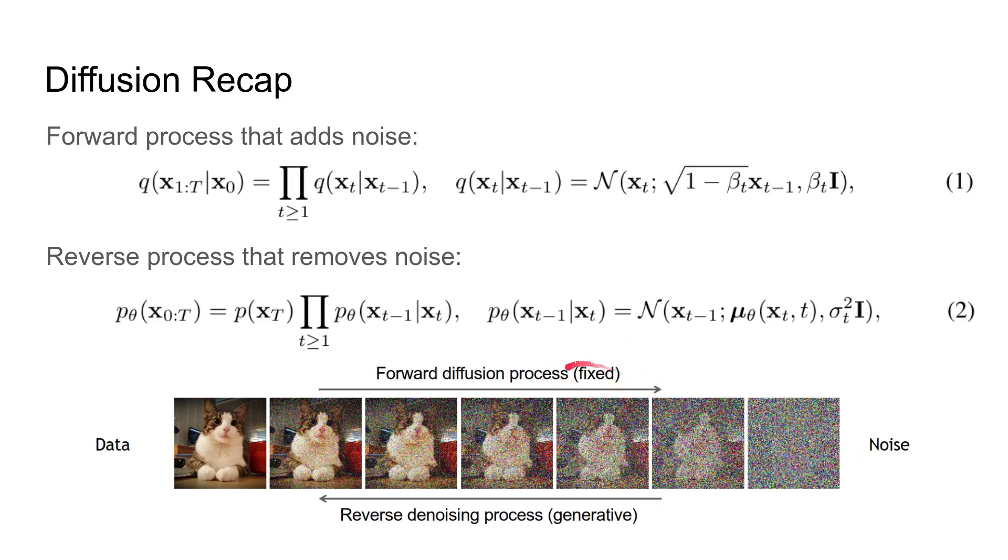If we repeat this long enough, eventually the image will become full noise. There are no learnable parameters in the forward diffusion process, it's fixed. The reverse process is where the magic happens. From the given image x_t and the current time step t, the network predicts the mean of a gaussian distribution such that sampling from that distribution removes one step of the noise.